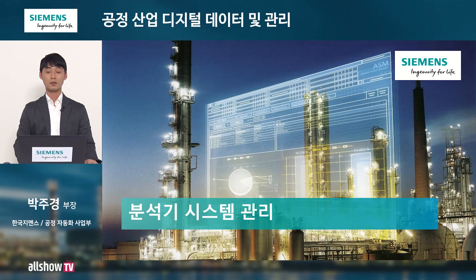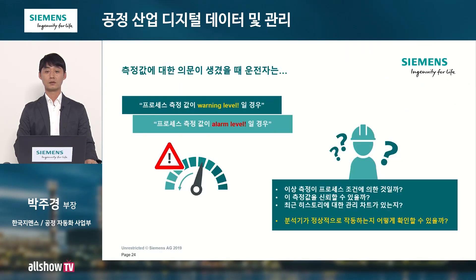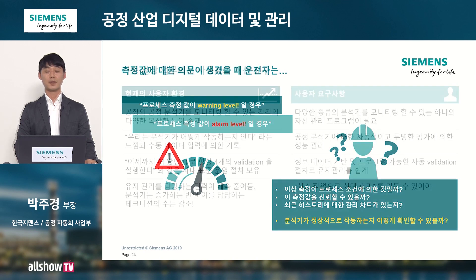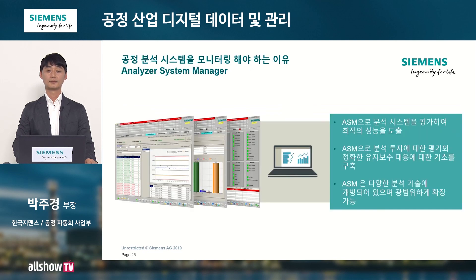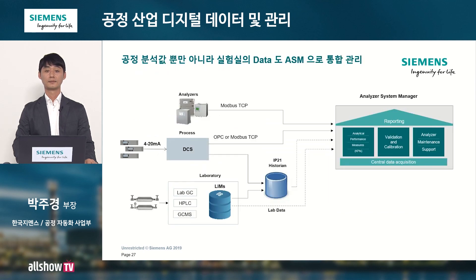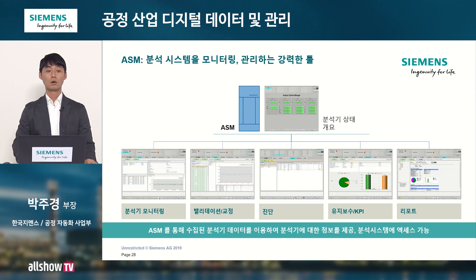다음은 분석기 시스템 관리에 관련해서 말씀드리겠습니다. 분석기를 사용하는 현장에서 가장 큰 고민이 분석기의 정상 작동 여부입니다. 분석기 관리 현장은 복잡한 툴, 수동 데이터 입력 및 기록, 사내 표준 운영 절차, 그리고 분석기는 증가하나 유지 관리할 수 있는 인력이 줄어들어 어려움을 겪고 있습니다. 이에 따라 지멘스는 ASM이라고 하는 소프트웨어를 소개합니다. 직접 아날라이저로부터 데이터 취득, DCS로부터의 데이터 취득, 그리고 라보라토리로부터의 데이터 취득이 가능하며, 취득된 데이터 기반으로 분석기 모니터링, 밸리데이션, 진단, 유지 보수, 레포트가 가능합니다.